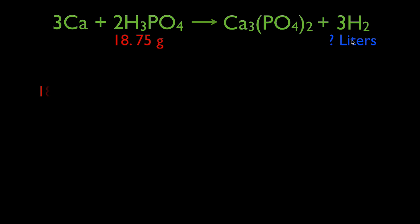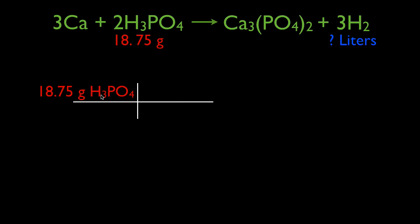Step one is to convert from grams to moles because it's a molar relationship — that's always the first thing we do if we're given grams. If we were given moles, we could skip step one. We have 18.75 grams of phosphoric acid. I always write down the number, the unit, and the chemical formula to keep track of which substance I'm talking about.